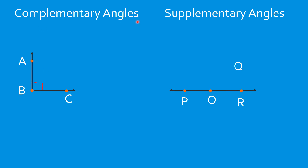Today you're going to learn about complementary angles and supplementary angles. Here I have a right angle, and we know that the measure of a right angle is 90 degrees. If I draw a ray from the same vertex B going there — let's name this point as point D — this ray divides the right angle into two angles. If this is 30 degrees and we know the total is 90, therefore the other angle measures 60 degrees. These two angles are what we call complementary angles.